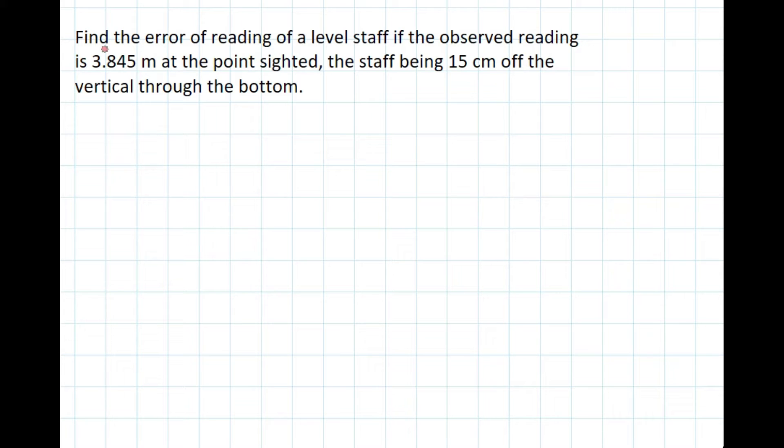Hello everyone, welcome to Engineered. This question is from surveying, particularly from leveling. Find the error of reading of a level staff if the observed reading is 3.845 meters at the point sighted, the staff being 15 centimeters off the vertical through the bottom.